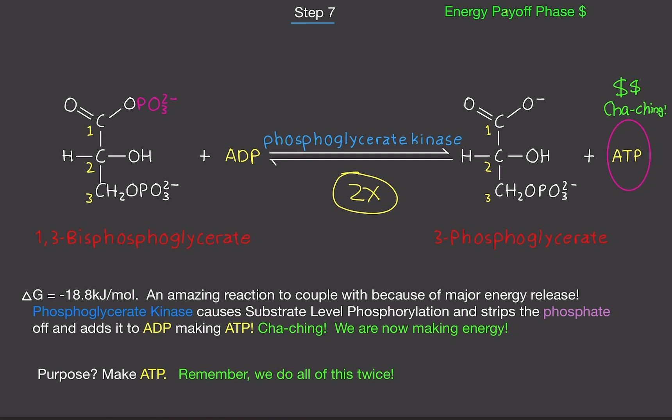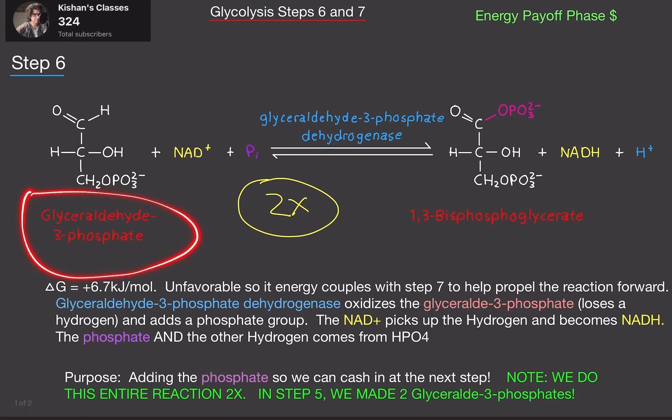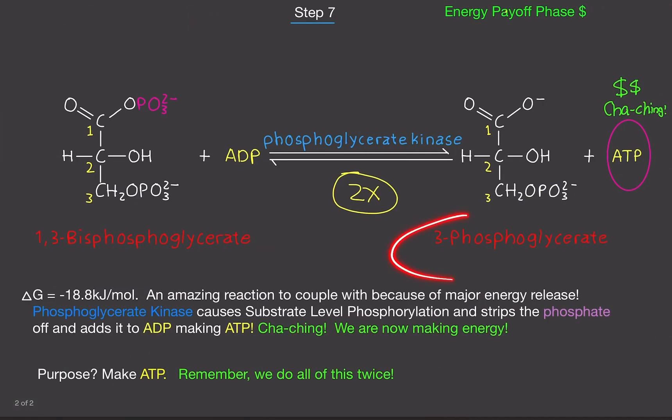And remember, we do this, all of it, twice. So this entire reaction is happening twice because now we have two molecules of 1,3-bisphosphoglycerate. Because we started off with two molecules of glyceraldehyde-3-phosphate, that means we're going to make two molecules of 1,3-bisphosphoglycerate. And then we're going to make two molecules of 3-phosphoglycerate. So everything runs twice. And that is it for step 7.